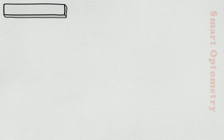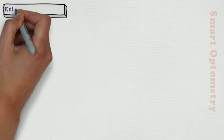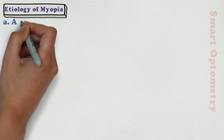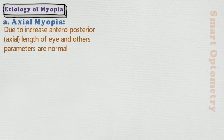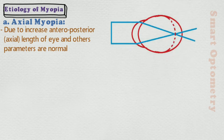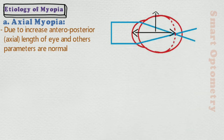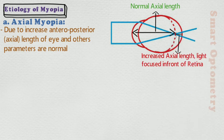Now let's study about etiology of myopia. A. Axial myopia: it occurs due to increased anterior-posterior or axial length of the eye, and other parameters are normal. Here is the example of axial myopia — this is the normal axial length, and due to increased axial length, light is focused in front of the retina.